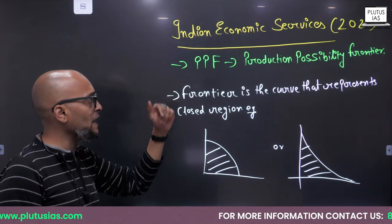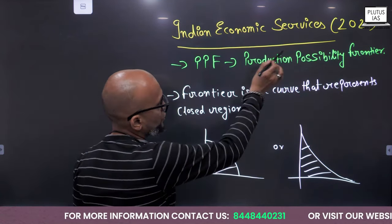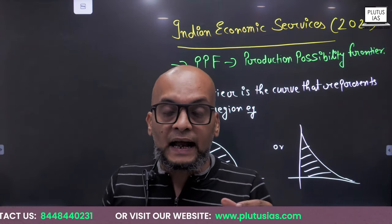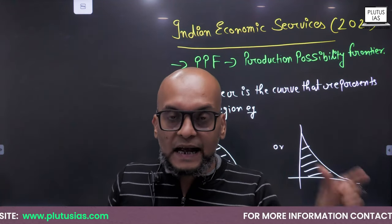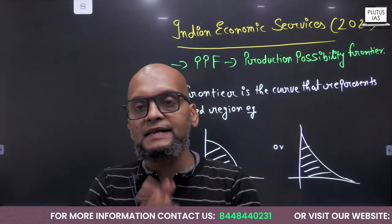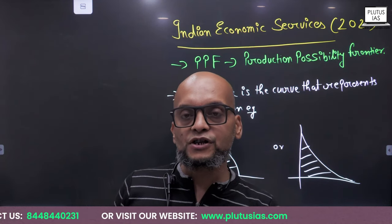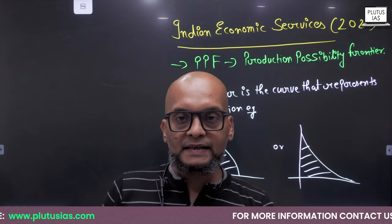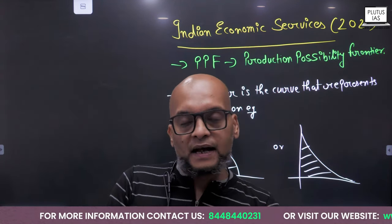PPF means production possibility frontier. It is going to tell us that in an economy, if we produce one good at some quantity, then how much of another good can be produced. When we are basically talking about PPF, there are few assumptions that have to be kept in mind. First thing is, we are assuming that in an economy only two goods are produced — that is good A and good B — and this is the most important assumption.